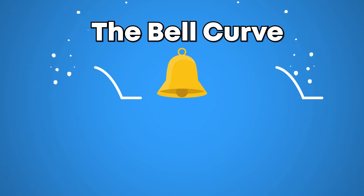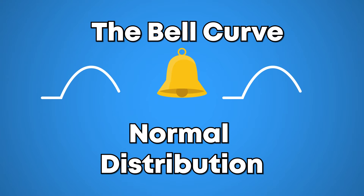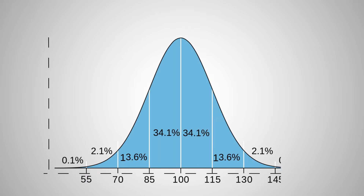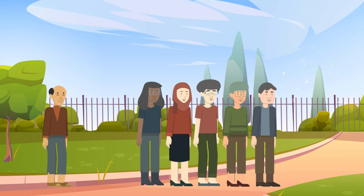The bell curve, also referred to as normal distribution, is called that way because this is how data tends to be distributed quote unquote normally. And the graph used to display this distribution looks like a bell.